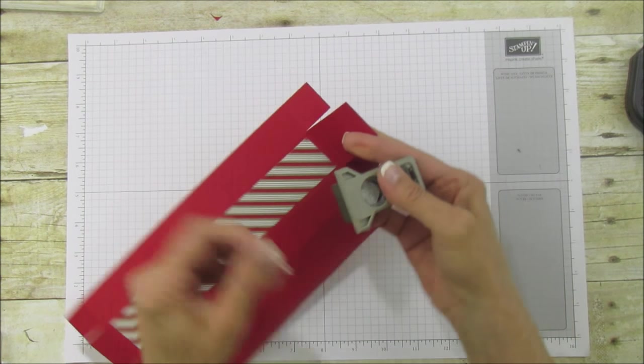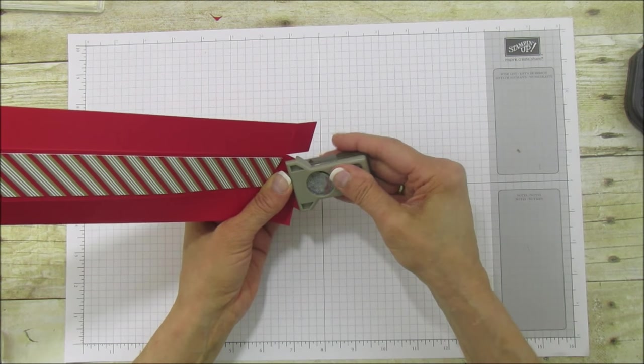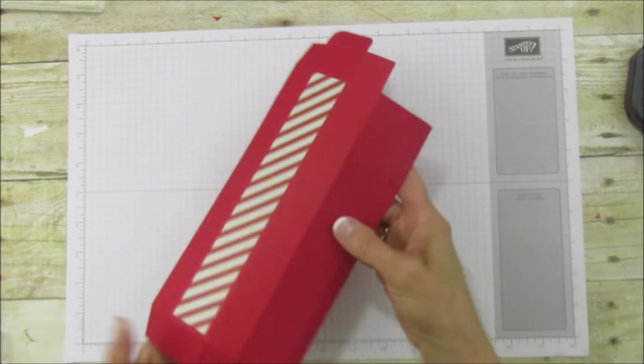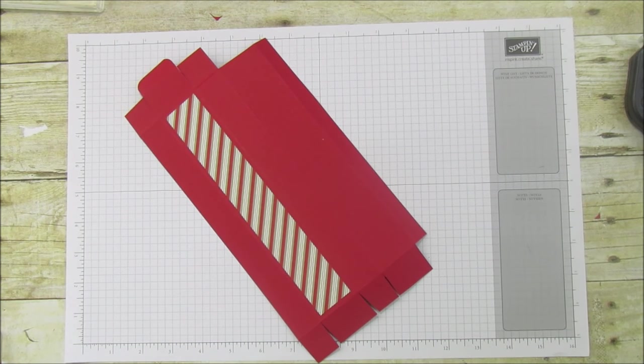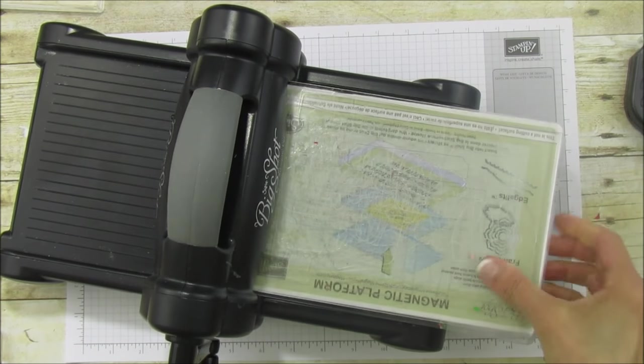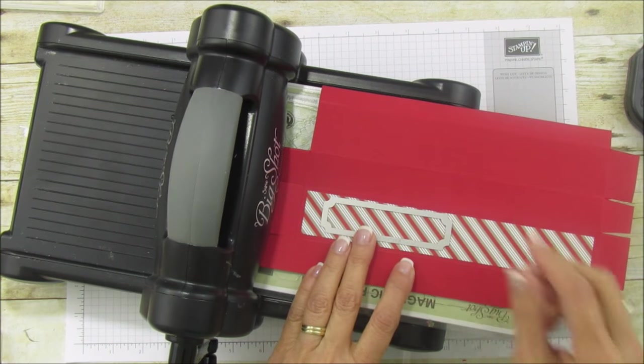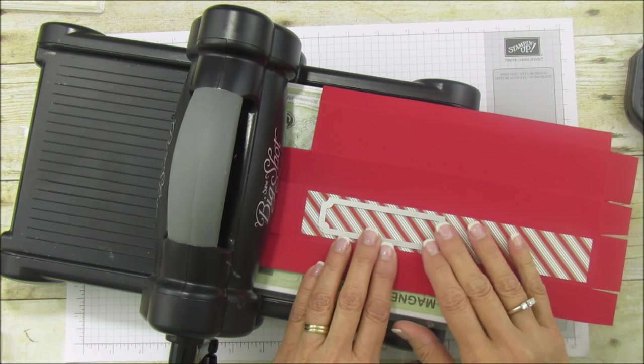Then I'm going to take my corner rounder and I'm going to round the corners up here and this will just help it to fold in easier. So let's grab the big shot and get our window put in here.